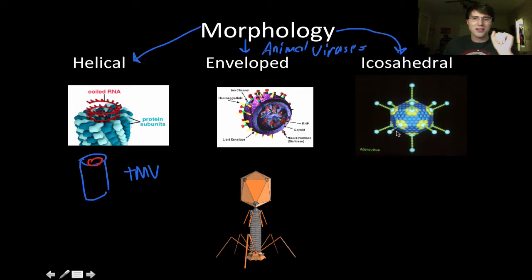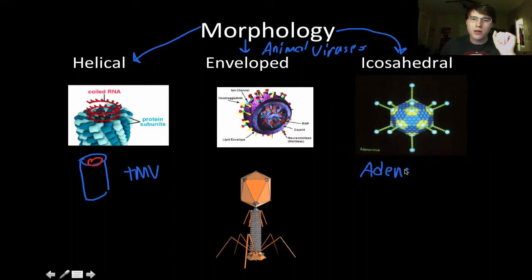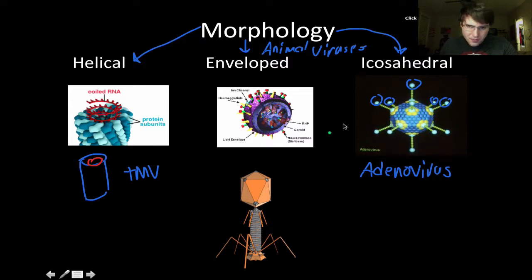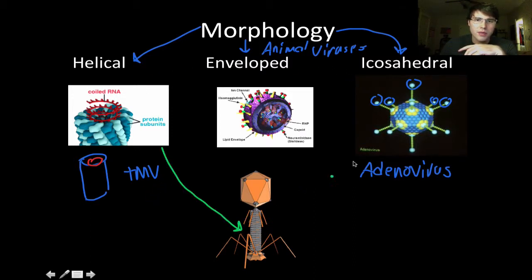There are also icosahedral viruses, which are many-sided polygons and arguably the scariest looking. An example is the adenovirus, which causes pneumonia. It has little outpouchings — those are glycoproteins that help determine its host range, which we'll talk about later.